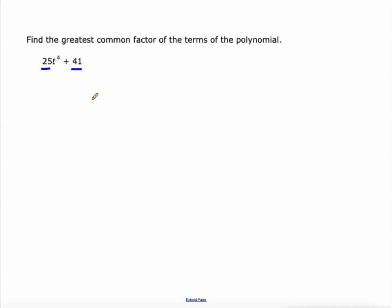Well, they don't actually share a greatest common factor. So it's 1. They're what we call relatively prime, because they don't share any common factors except for 1.